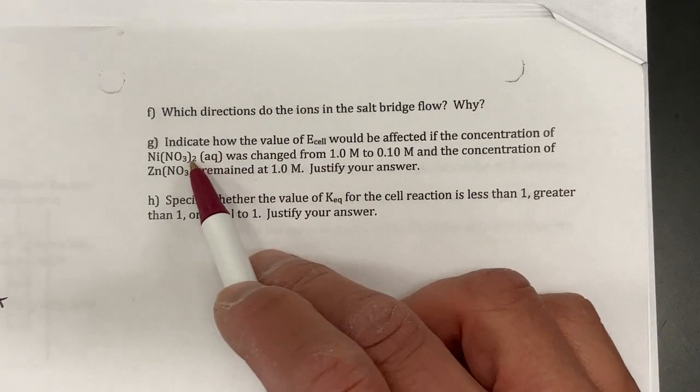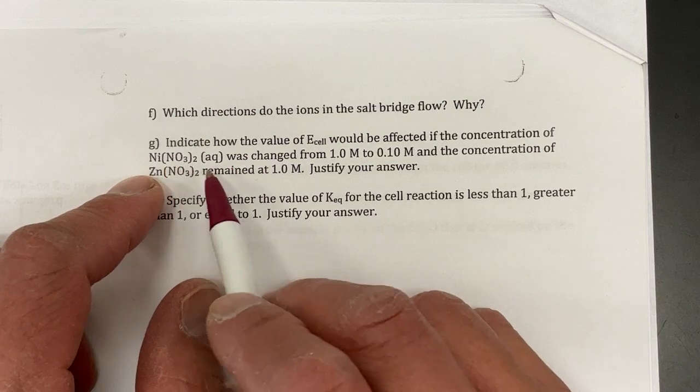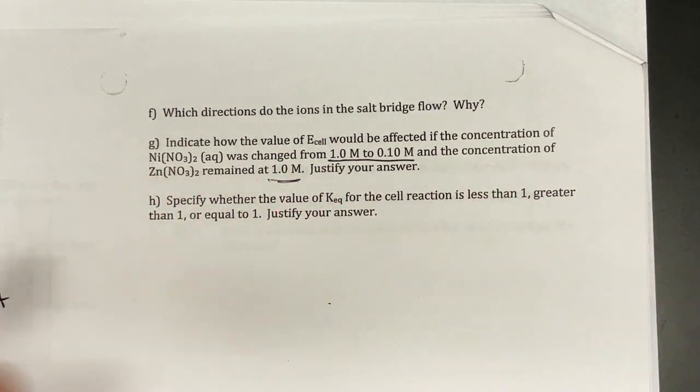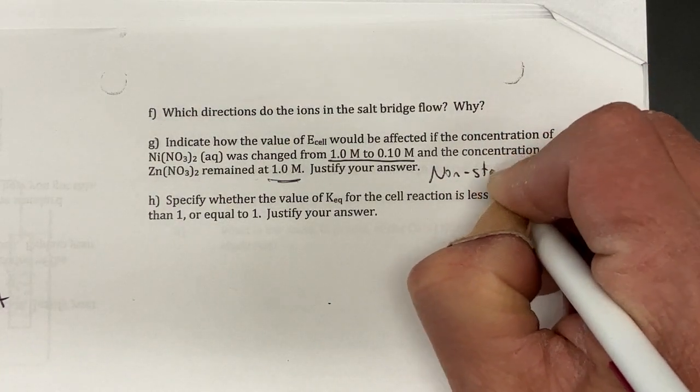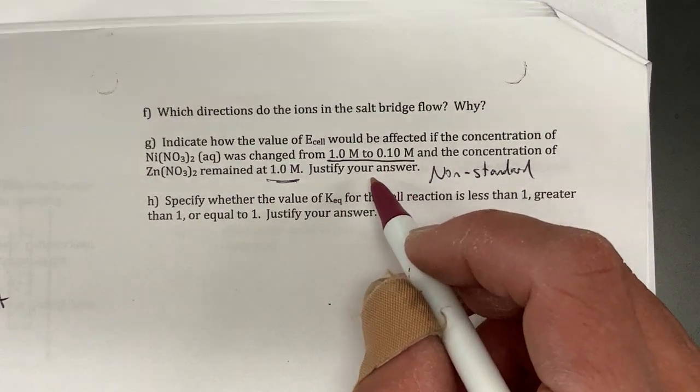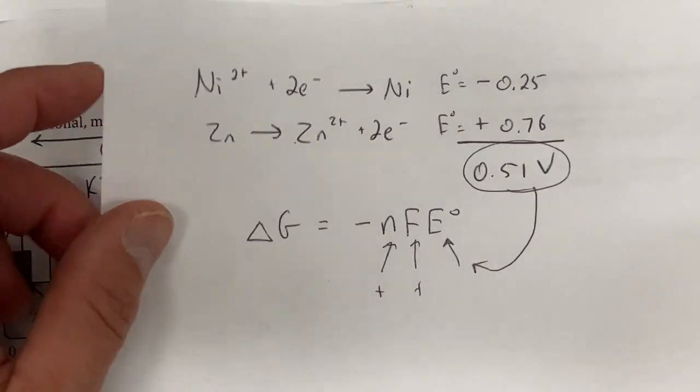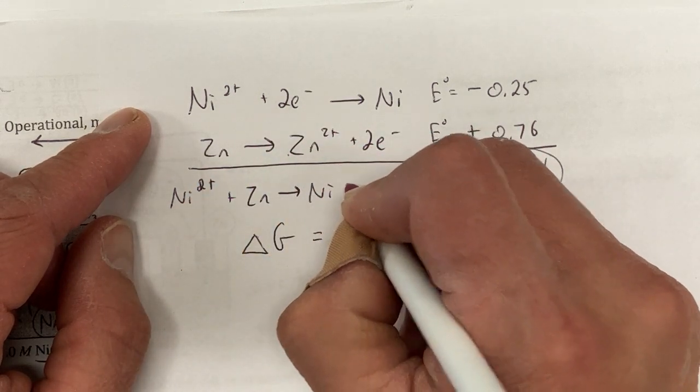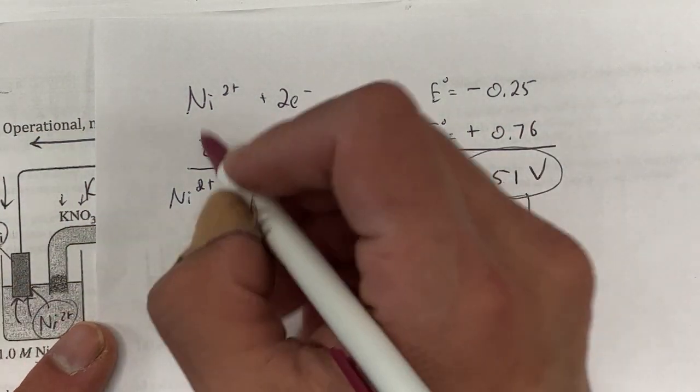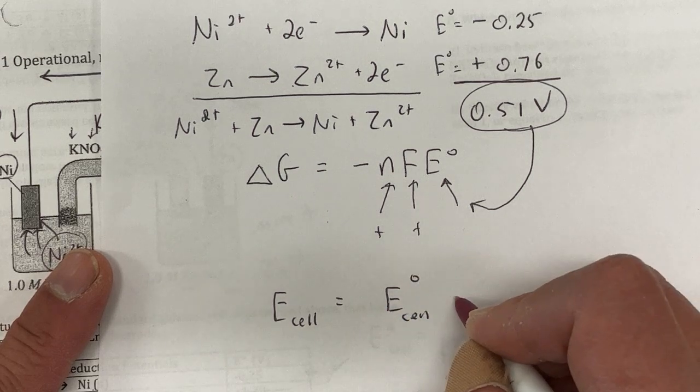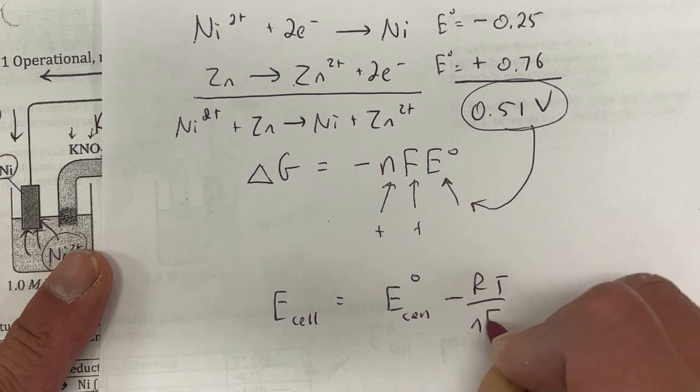Question G: indicate how the value of E cell will be affected by the concentration of nickel if it was changed from 1 molar to 0.1 molar, and the concentration of zinc if it remained at 1 molar. So this is now non-standard, non-standard conditions. And if I have my overall net ionic equation—I didn't write that out, I should write that out. So my net ionic equation is Ni²⁺ plus Zn goes to Ni plus Zn²⁺. So remember, non-standard cell, I have the Nernst equation which tells me that E cell equals E°cell minus RT over nF ln Q. So this is on the equation sheet now.